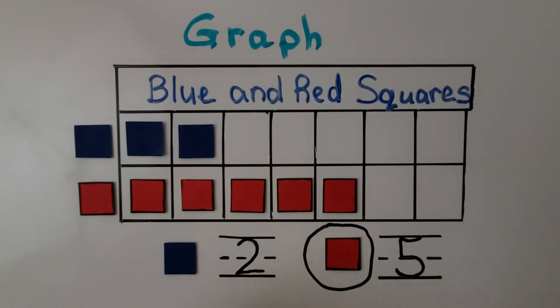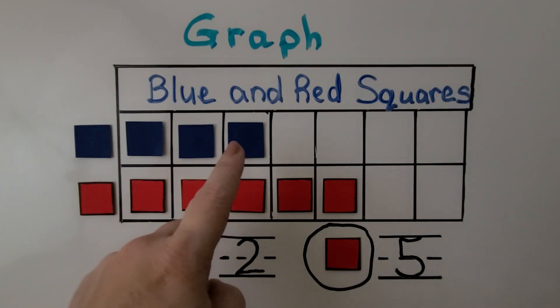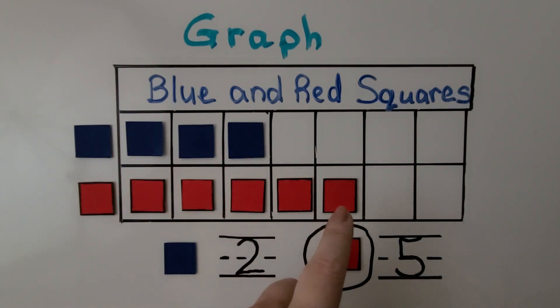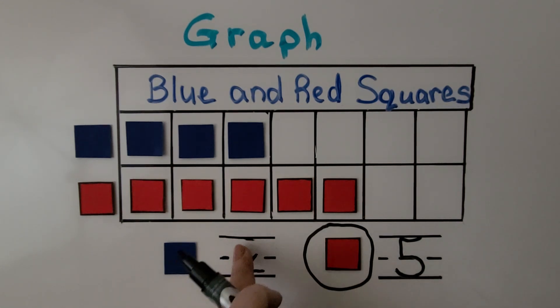If we add another blue counter, will our answer change? Will there still be more red than blue? We'll have one, two, three blue and five red. And five is greater than three. So yes, we would still have more red counters. Except now, instead of two, we would have three blue. Five would still be the greater number.